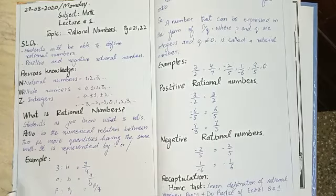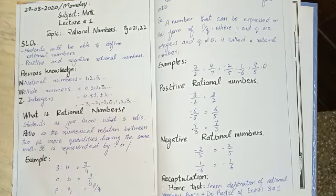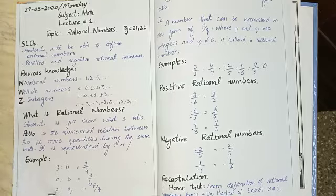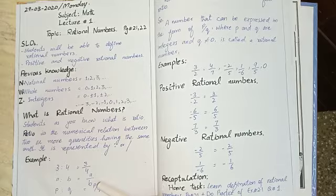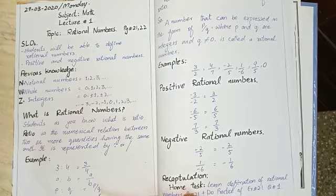Now come to the examples. 3:4 = 3/4, which means we can write 3 ratio 4 as 3 by 4. Next example: a:b = a/b, p:q = p/q.